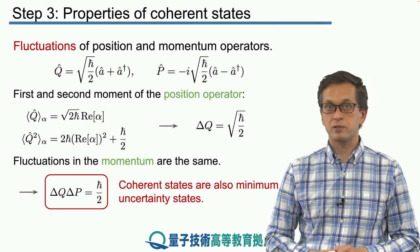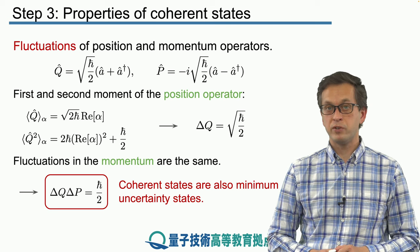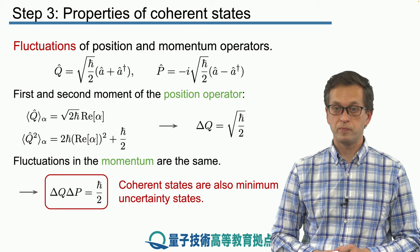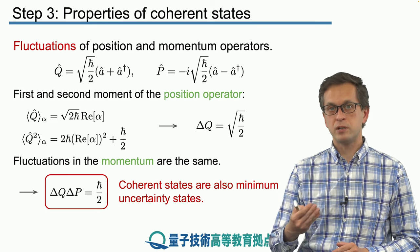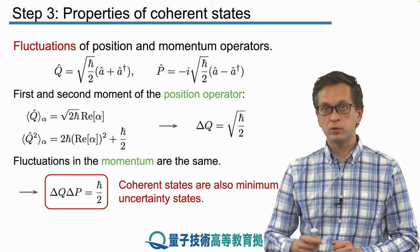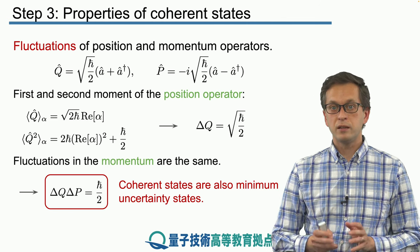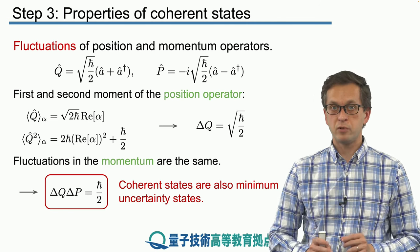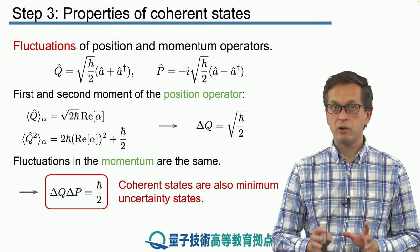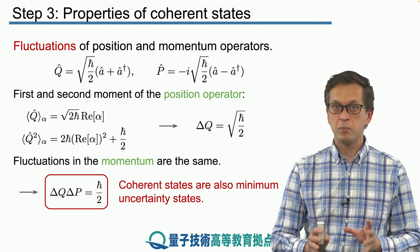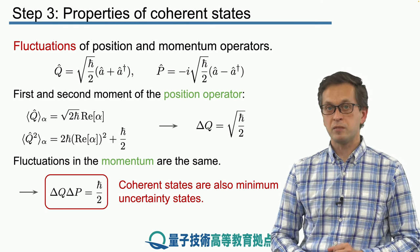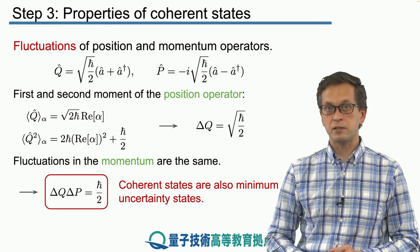We have seen examples of a minimum uncertainty state in previous lessons, namely the vacuum of a single quantum mode. But if we consider single photon modes or multiple photons in a single mode, their fluctuations increase with the number of photons. This is not true for coherent states — any coherent state, regardless of the magnitude of its complex eigenvalue alpha, satisfies the minimum uncertainty relations.